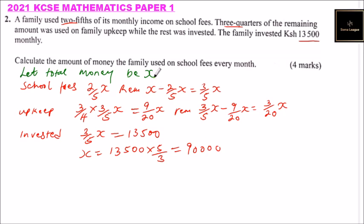So the family was getting 90,000 every month. We are required to calculate the amount that was used for school fees. So we just said 2 over 5 X equals, that is now that we have found X, 2 over 5 multiplied by 90,000 and you will be able to get, you simplify or you use your calculator, you get 36,000. So that was what was used for school fees and you'll be able to score marks.